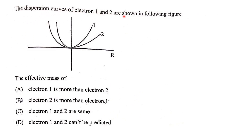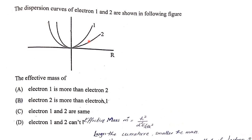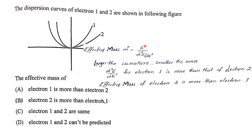The dispersion curves of electrons 1 and 2 are shown in a figure — these are plots of energy E versus wave vector k. The effective mass m* = ħ²/(d²E/dk²). Here d²E/dk², the curvature, is larger for electron 1 than electron 2, so electron 2 has the greater effective mass. Therefore option B is the right answer.